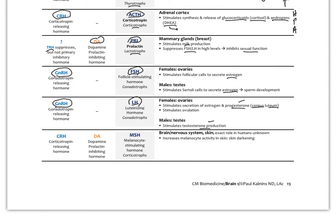There is another hormone, MSH, melanocyte-stimulating hormone, also released by corticotrophs when they produce ACTH. Its releasing hormone is corticotrophin-releasing hormone and its inhibiting hormone is dopamine. MSH doesn't appear to have much of a role in humans, though it is involved in skin darkening and in animals is important for coat coloring.